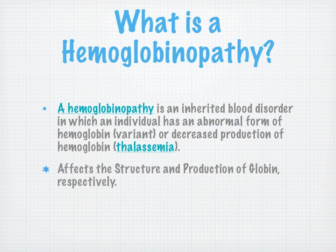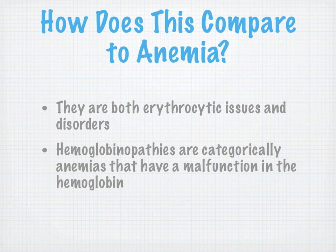Let's define hemoglobinopathy. A hemoglobinopathy is an inherited blood disorder in which something went wrong — you either have an abnormal form or a decreased production of hemoglobin. So we're talking about affecting either the structure or the production of the globin. And how does this compare to anemia? It is an anemia. Hemoglobinopathies are categorically anemias that have a malfunction in the hemoglobin.